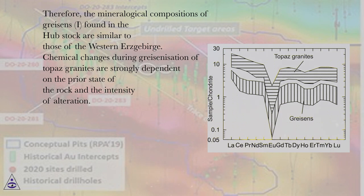Chemical changes during greisenization of topaz granites are strongly dependent on the prior state of the rock and the intensity of alteration.